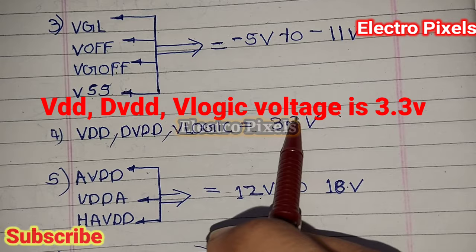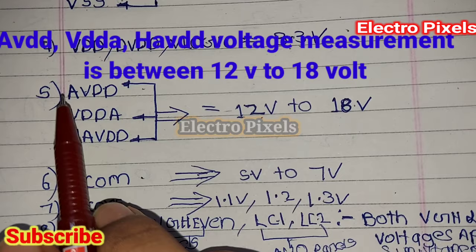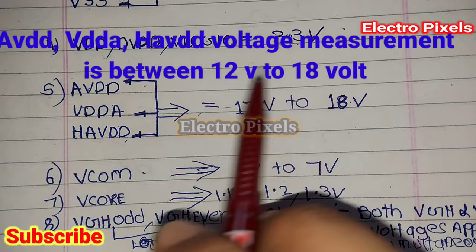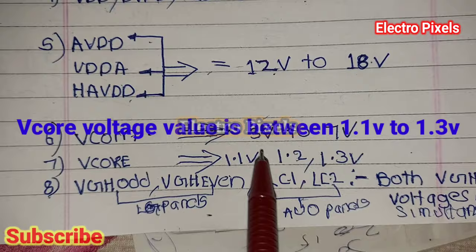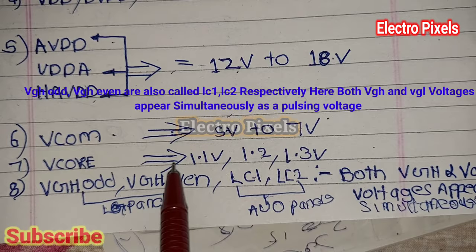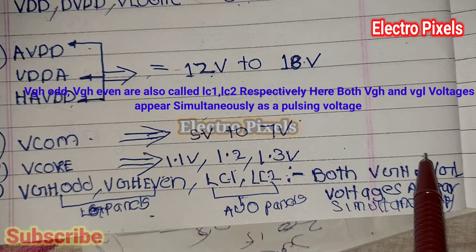The next voltage is VDD, DVDD, and V-logic voltage. The value of these is 3.3V. The fifth one is AVDD, VDDA, and HiVDD voltage, with a measurement between 12V to 18V. The next is VCOM voltage, with a value range between 5V to 7V. Finally, the V-core voltage has a value between 1.3V to 1.4V.